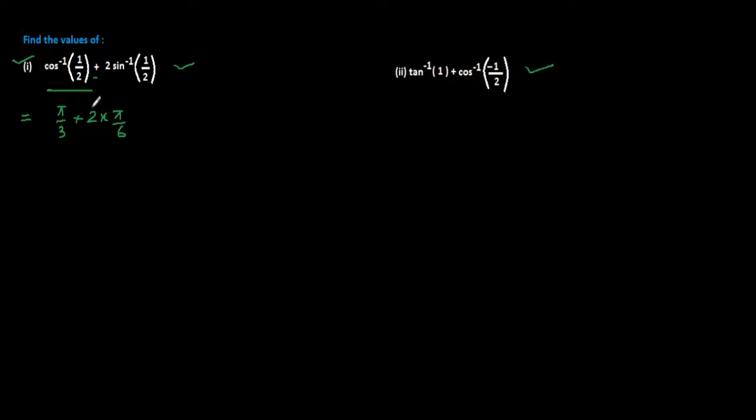In into we can cancel out 2, 3s of 6. It is pi by 3 plus pi by 3. After taking LCM you will get 2 pi by 3. This is the answer of this first question.